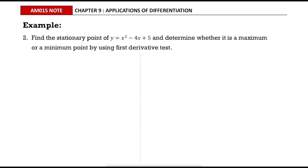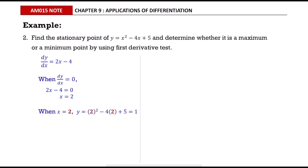In this example we want to find the stationary point and determine whether it is a maximum or minimum point using the first derivative test. Find the first derivative first, then equate it with zero to find the value of x. After that, find the y value by substituting x = 2 into the equation, and state the stationary point.